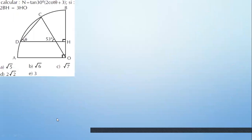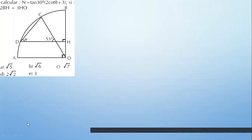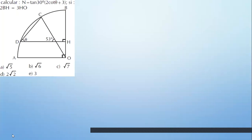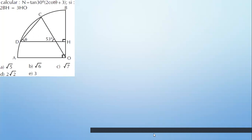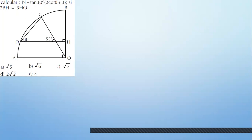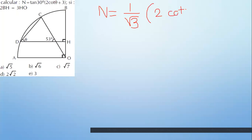Siguiente problema. Un poco más difícil. ¿Qué les están pidiendo? Tangente de 30. Eso ya ni siquiera tienes que pensarlo. Recuerdas al equilátero: si tangente de 60 es raíz de 3, entonces tangente de 30, el complemento, es la inversa: 1 sobre raíz de 3. Y por 2, tangente de theta más 3. Theta no lo tienes, déjalo ahí. Tienes que verlo en el gráfico.